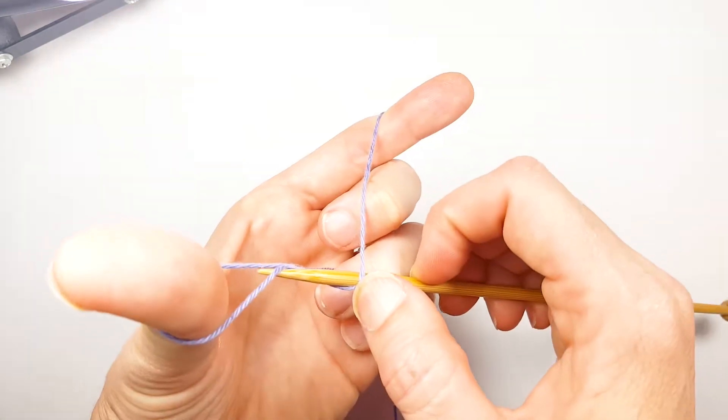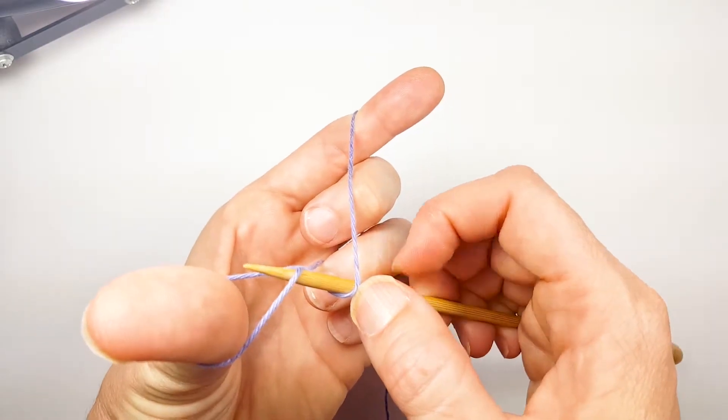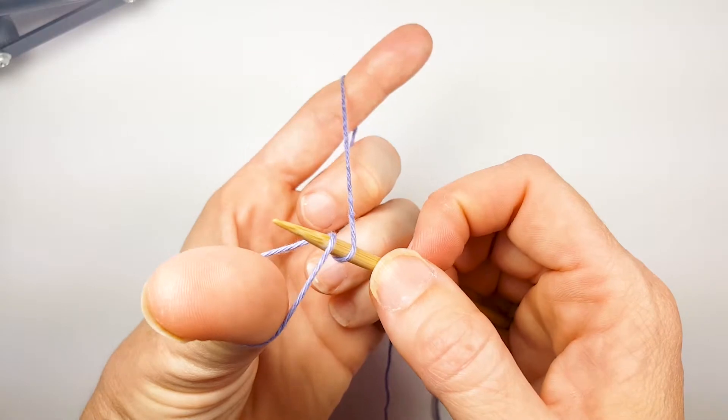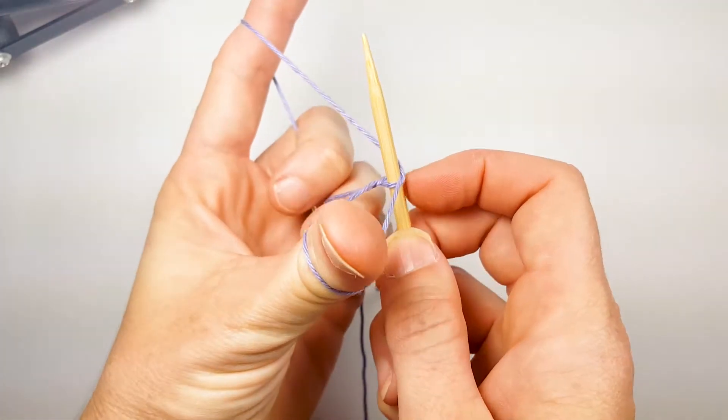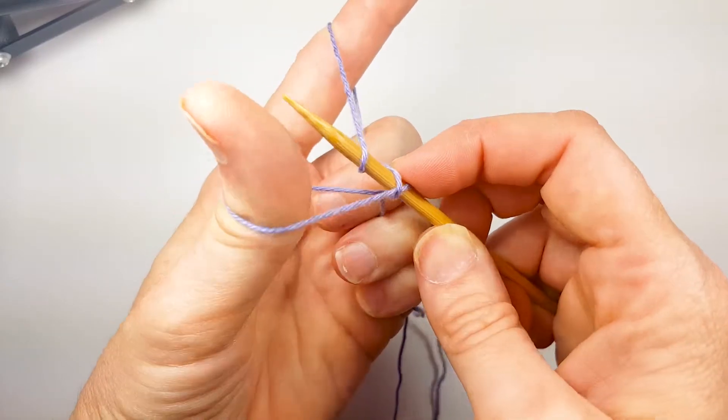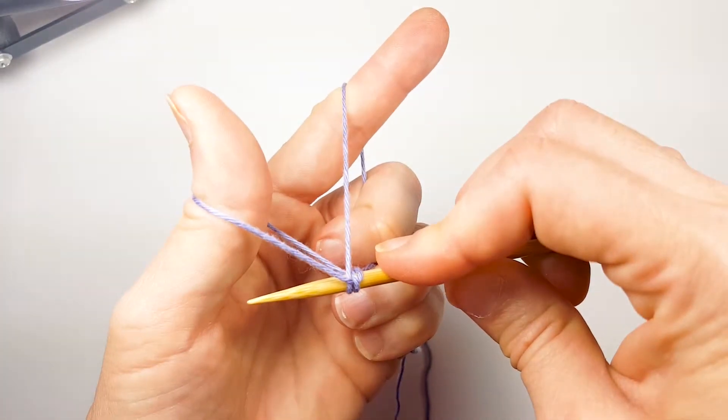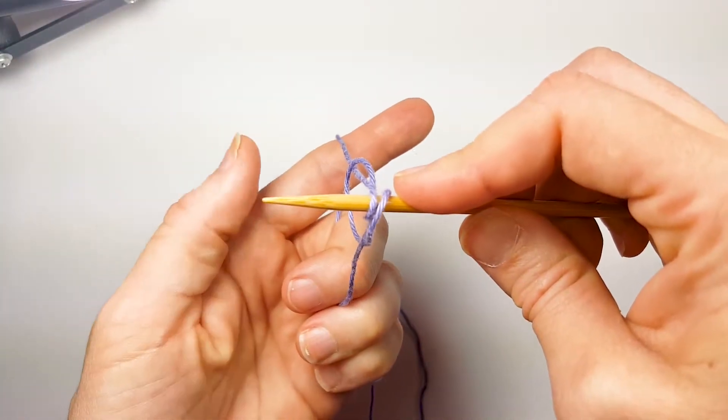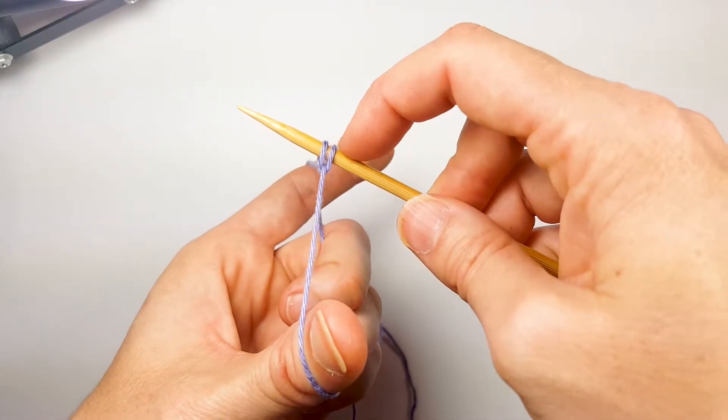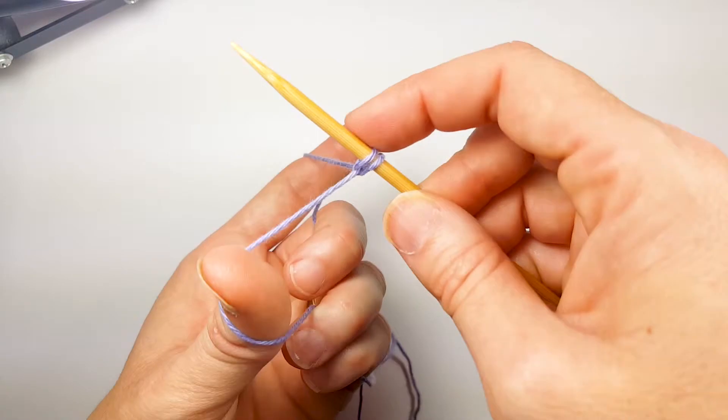We're going to push our needle tip back up through that loop and then we're going to catch this yarn and pull it back through that loop. So we're going to rotate our needle over the top of this and catch it and then pull it back through that loop. Release our thumb and pull it snug. You can see we now have two stitches on our needle.